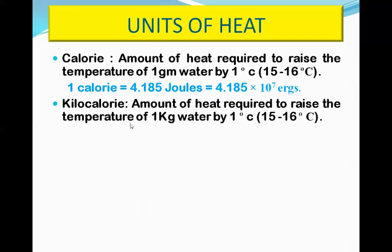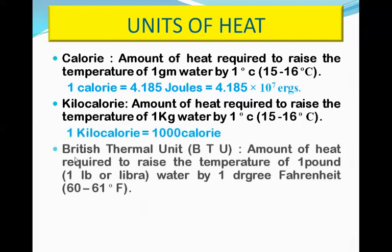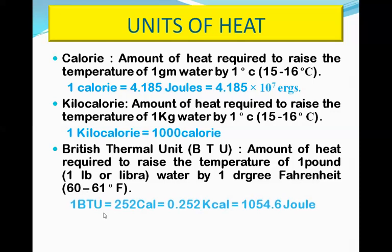The kilocalorie is a bigger unit than the calorie; one kilocalorie is equal to 1000 calories. The British Thermal Unit (BTU) is the amount of heat required to raise the temperature of one pound (1 lb) of water by one degree Fahrenheit, from 60 to 61 degrees Fahrenheit. The relationship between BTU and other units is: 1 BTU = 252 calories = 0.252 kilocalories = 1054.6 joules.